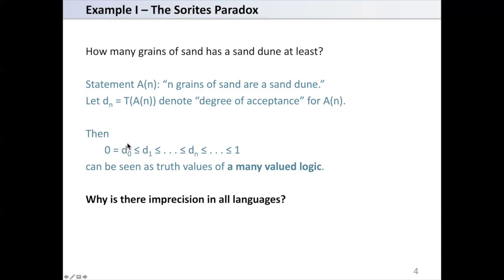Then degree of acceptance for A0 is d0, which equals 0, which is less than or equal to d1, less than or equal to dn, and this is less than or equal to 1. This can be seen as truth values of a many-valued logic.